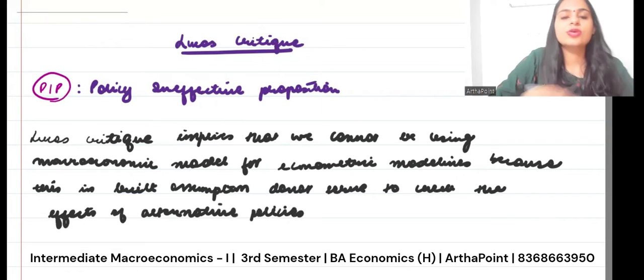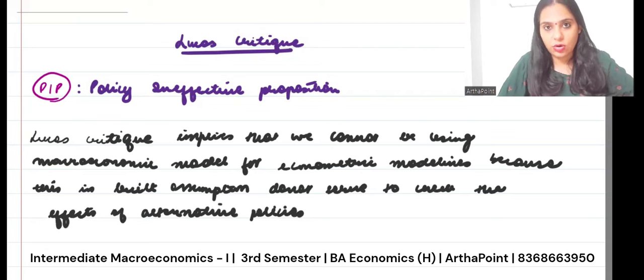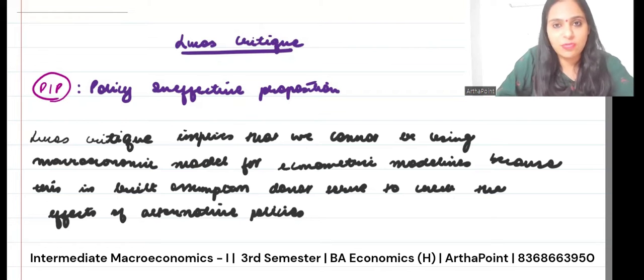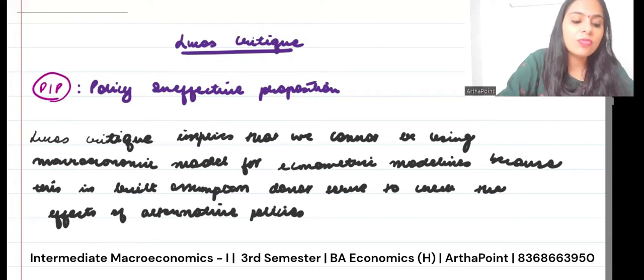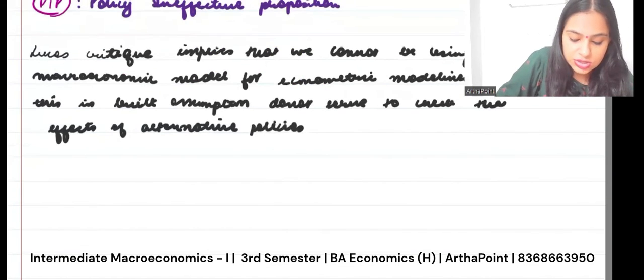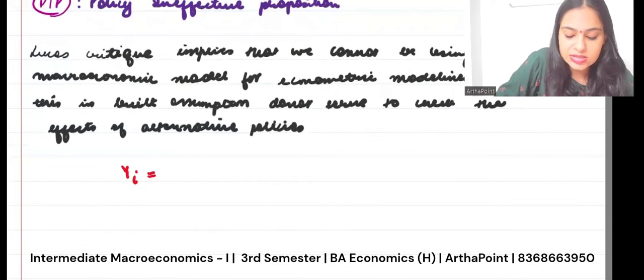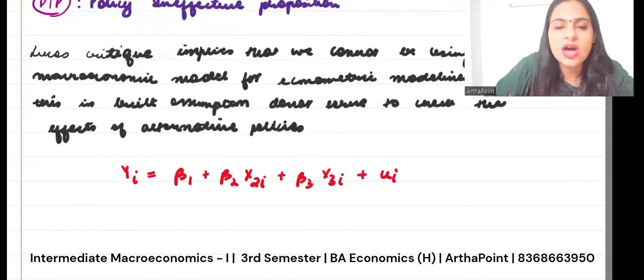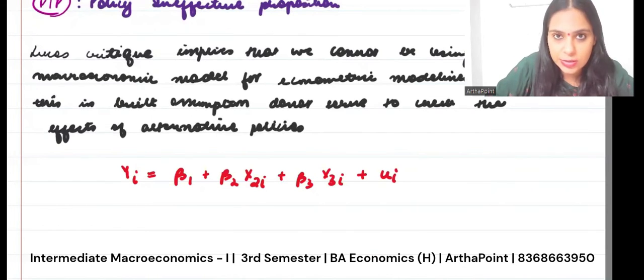When I talk about econometrics, in econometrics we go ahead and talk about one particular kind of model. For example, econometric models are something like this: Yi = β1 + β2X2i + β3X3i + εi. This is how my econometric model looks like.